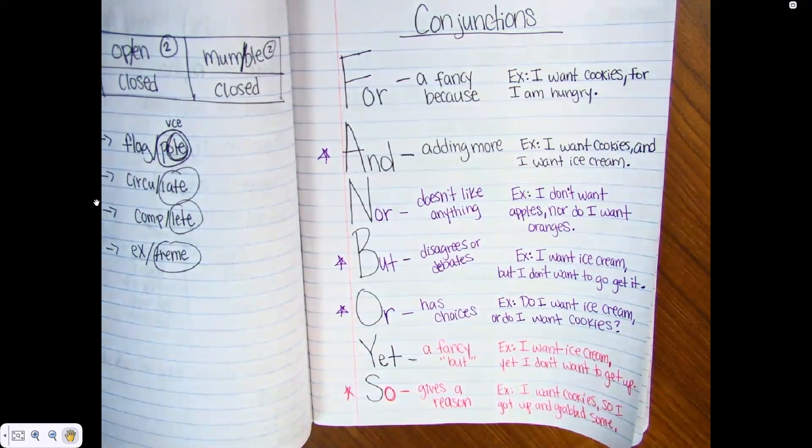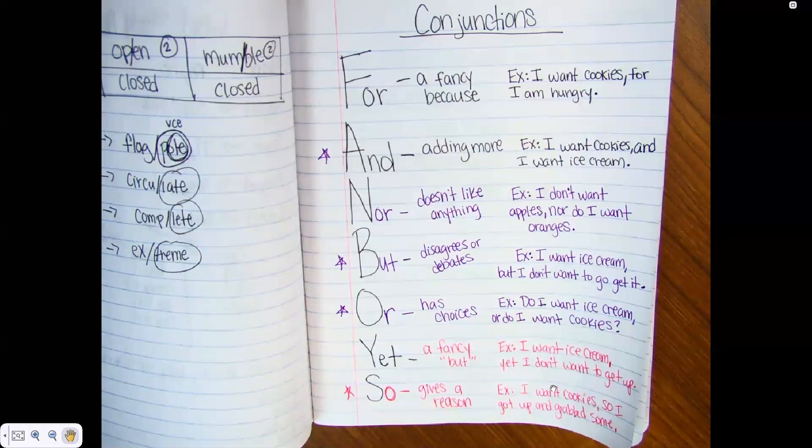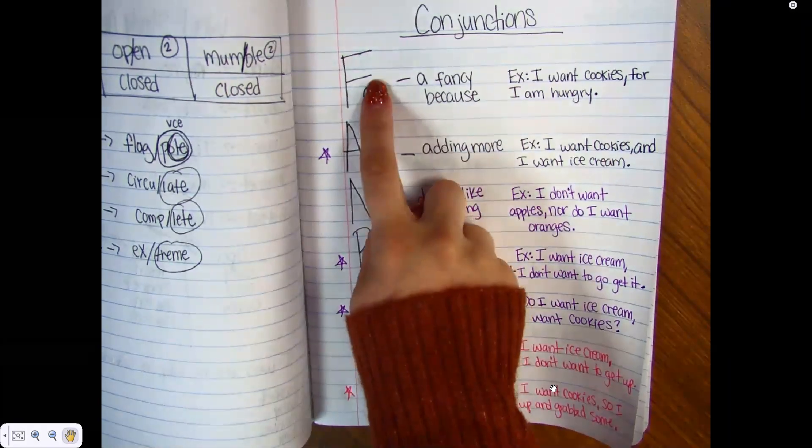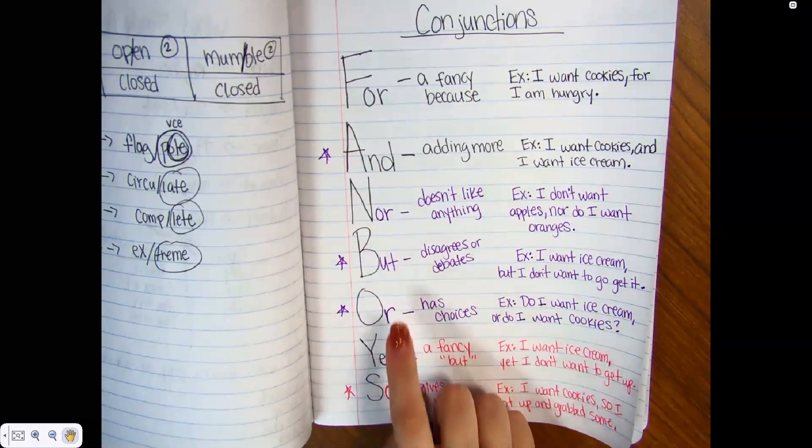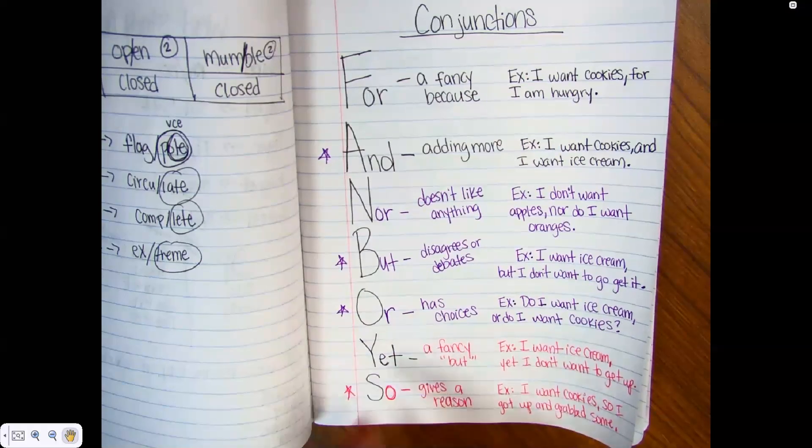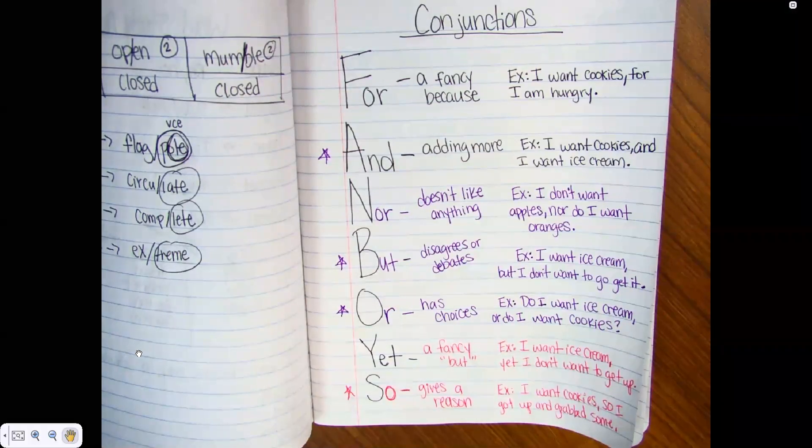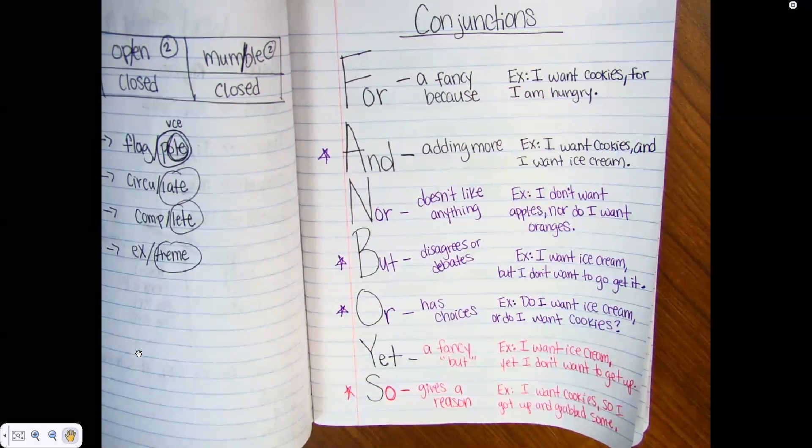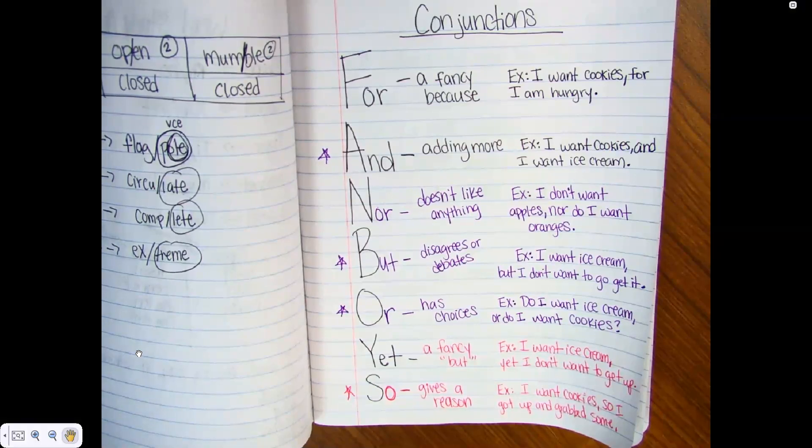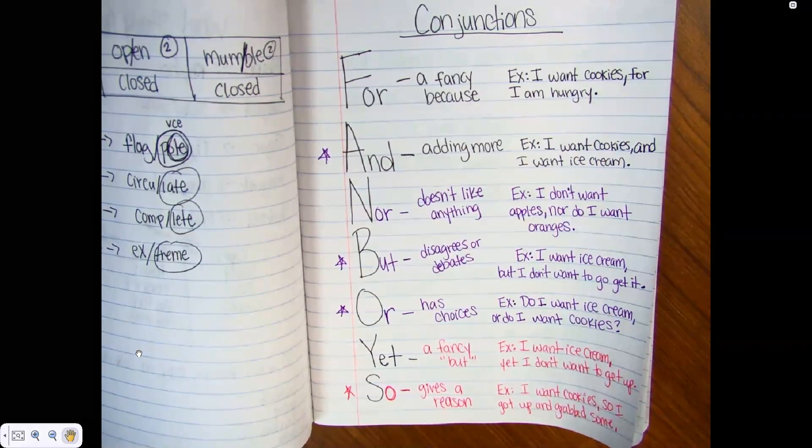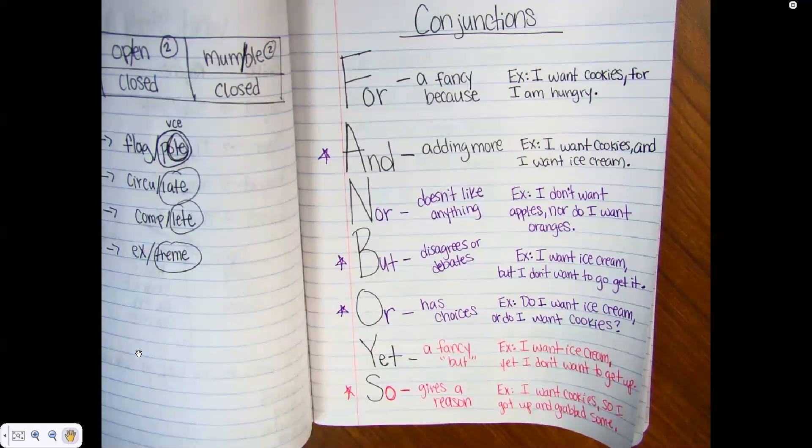All right, so now I want you to practice. We're going to do a little practice with it. So in the chat, I want you to send me—so we practiced with for and nor but or so—let's practice with yet and so. Let's practice with yet and so. So either use yet or use so and send me a sentence in the chat. Either use yet or so and send me a sentence in the chat. Let's practice yet or so and send me a sentence in the chat.